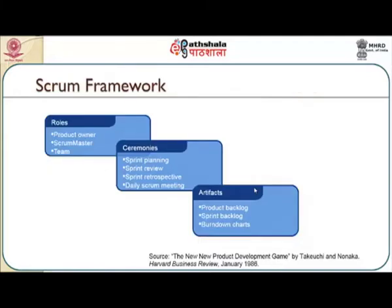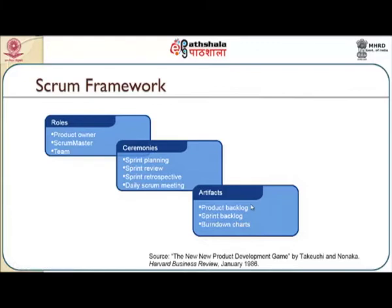Looking at the Scrum framework, there are different elements. The first is roles: the major roles that Scrum focuses on are the product owner, Scrum master, and the team. Next, looking at the ceremonies: sprint planning, sprint review, sprint retrospective, and daily Scrum meetings. Finally, the artifacts — the things to be produced by people involved in the process — will be in the form of product backlog, sprint backlog, and burndown charts, which exactly predict when I would complete what.